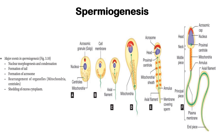Next is rearrangement of organelles. The mitochondria, which are scattered throughout the cell, rearrange themselves around the axial filament. They migrate to the midpiece, which has formed around the axial filament — since we need the mitochondria for energy production as the cell is moving. Then there is shedding of excess cytoplasm, where the remaining cytoplasmic contents are shed out of the cell.